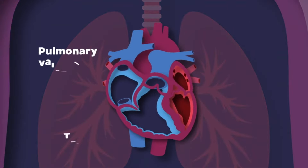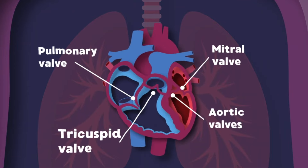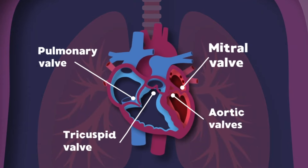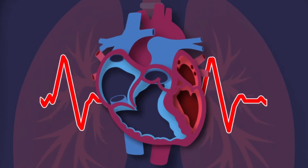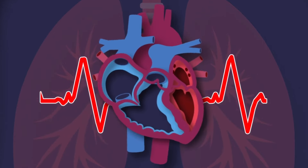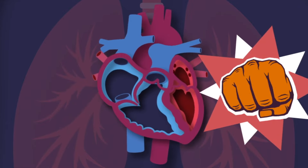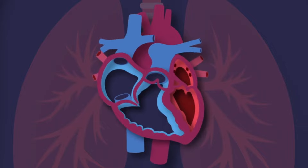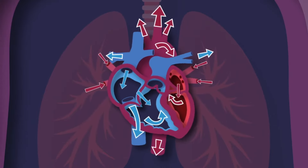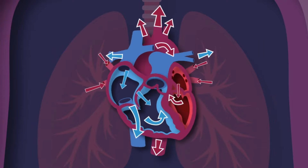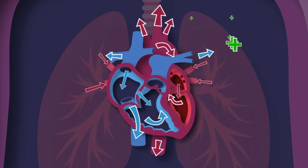I have four valves that open and close to control the blood through me — the tricuspid, pulmonic, mitral, and aortic valves. I'm your heart — I live inside of your chest, about the size of your fist, and I never take a rest. I pump the blood that fuels your body, so take care of me please.